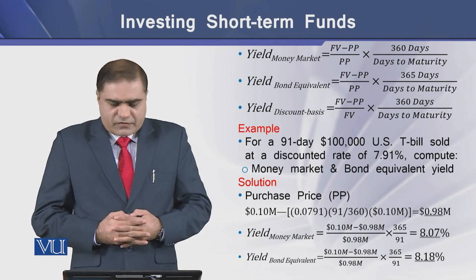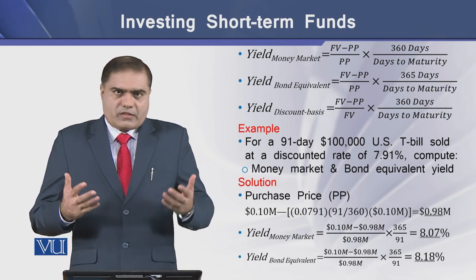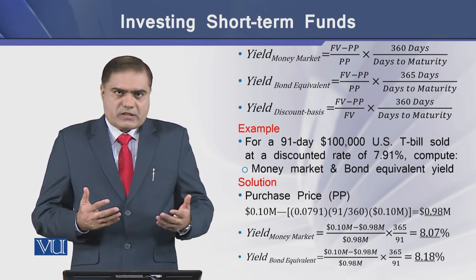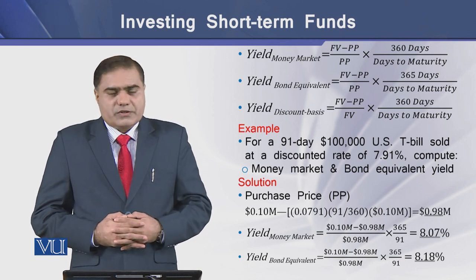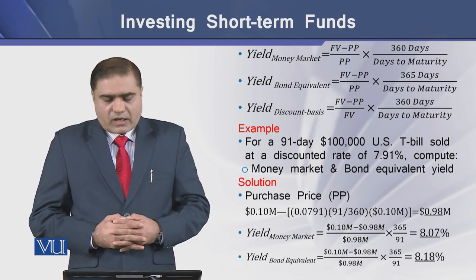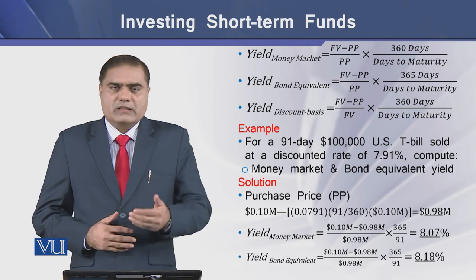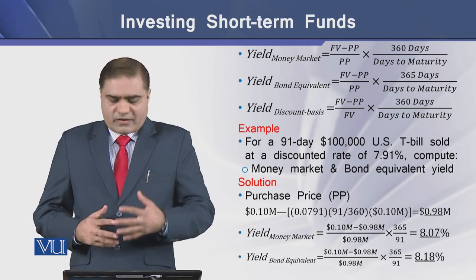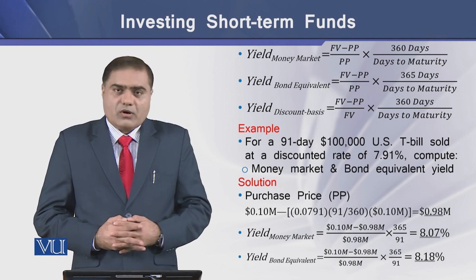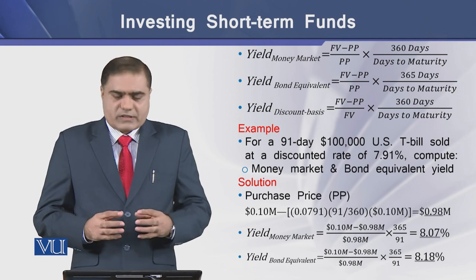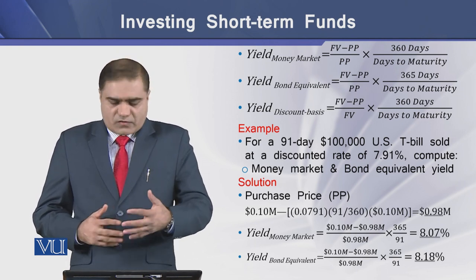Then we have the yield bond equivalent, which is computed by dividing the discount interest by the purchase price and analyzing it in a similar fashion. We can also compute the yield on a discount basis.